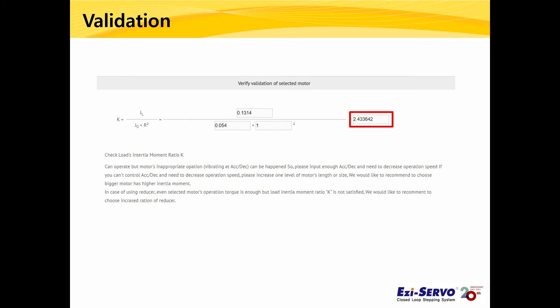Finally, let's verify the motor selection by calculating the moment of inertia ratio k, which is obtained by dividing the inertia of the load by the inertia of the rotor. If it exceeds the recommended ratio, the motor may step out, stop, or vibrate. Typical stepping motors allow inertia ratios from 1:5 to 1:10, whereas closed-loop stepping motors allow up to 1:30. It is not recommended to exceed a ratio of 30. If the ratio does exceed 30, use a larger motor or gearbox to reduce it. In this case, the inertia ratio is 2.43, so the 42M motor is suitable for this example system.